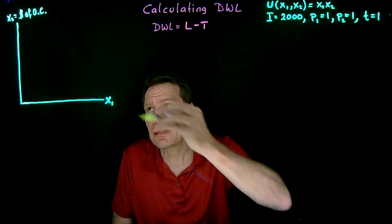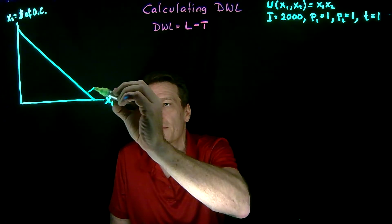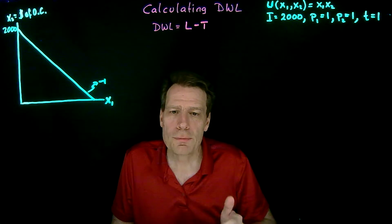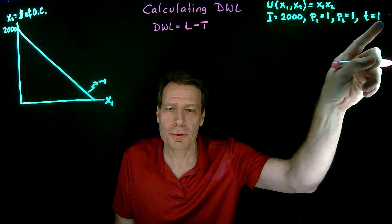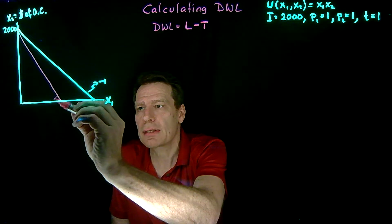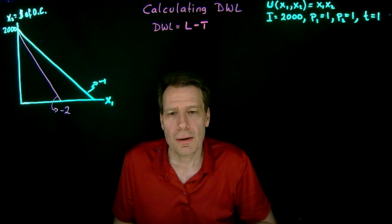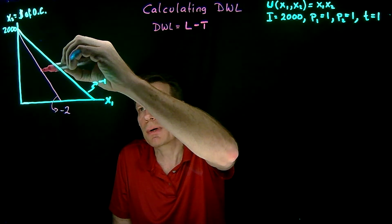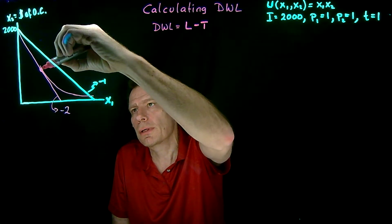Let's start with the graph. We start with the initial budget constraint, which is going to have a slope of minus one — one divided by one — and an intercept of $2,000 on the vertical axis because income is $2,000. Then we impose the tax, raising the price of good one from one to two. So we get a new after-tax budget constraint that now has a slope of minus two. To know how much tax this consumer will pay, we need to know where her utility-maximizing consumption bundle lies — where her indifference curve is tangent to this after-tax budget.